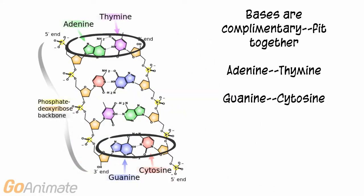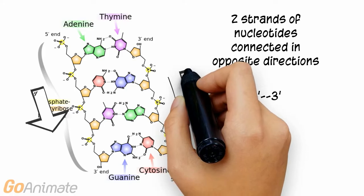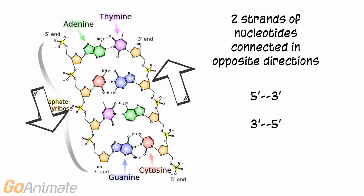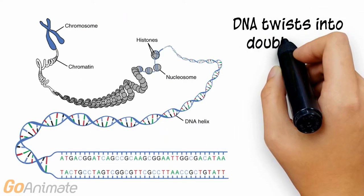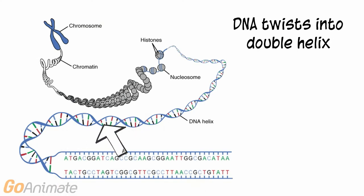The bases are complementary, which means they can fit together to form base pairs. Adenine can pair with thymine, and guanine can pair with cytosine. The bases form pairs that interconnect the two strands of nucleotides, which are connected in opposite directions. The two nucleotide strands twist together to form the double helix structure of DNA.